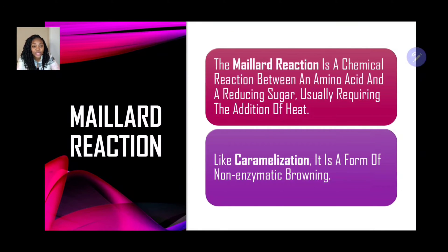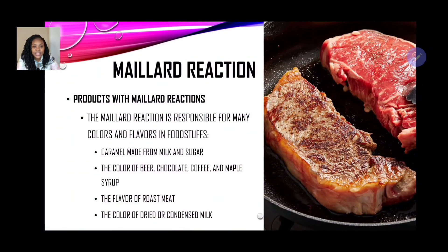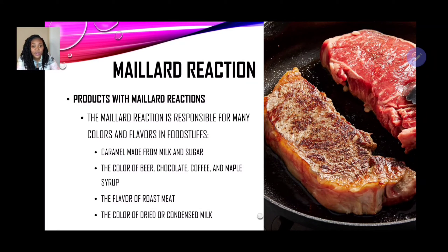Products showing the Maillard reaction include steaks or pork that are grilled or seared. The Maillard reaction is responsible for many colors and flavors in foodstuffs — the caramel color from milk and sugar, the color of beef, chocolate, coffee, and maple syrup, the flavor of roast meat, and the color of dried or condensed milk. That nice brown color gives a distinctive taste, look, and flavor.